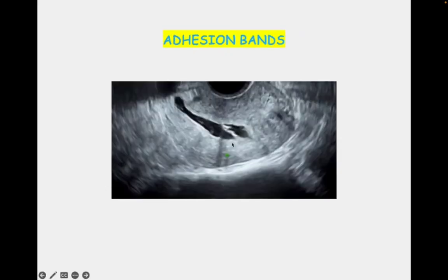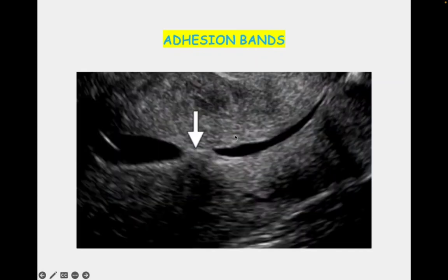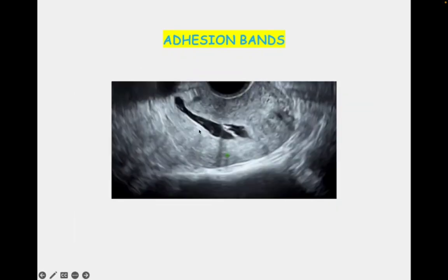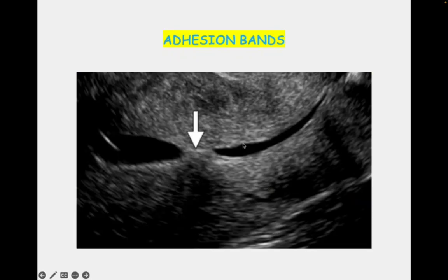Here you can see an adhesion band in the endometrial cavity. Here also an adhesion band is seen — this is a thin adhesion band, and this is a thick adhesion band where the two uterine cavities are almost totally adherent to each other.